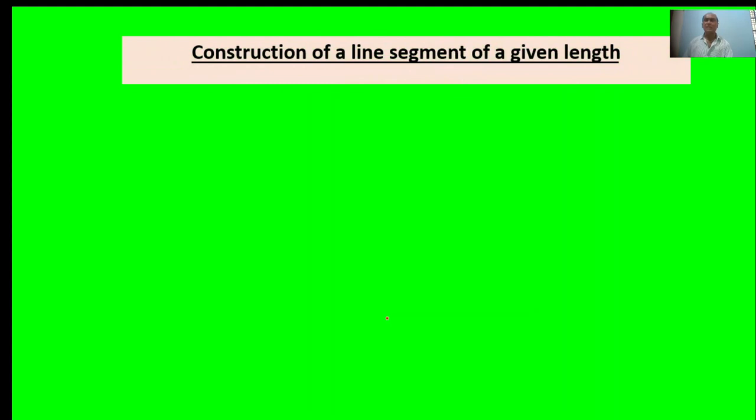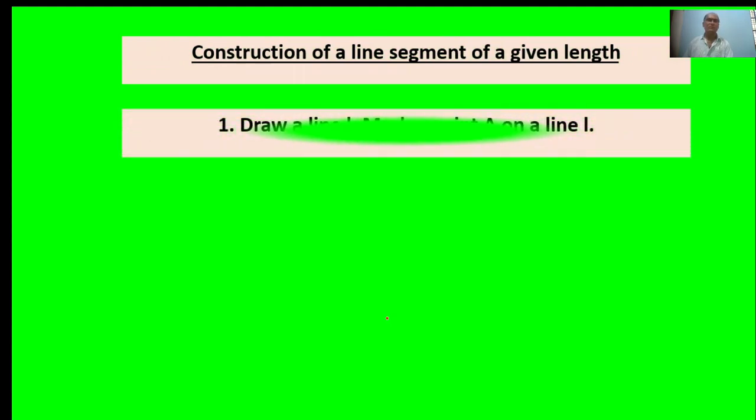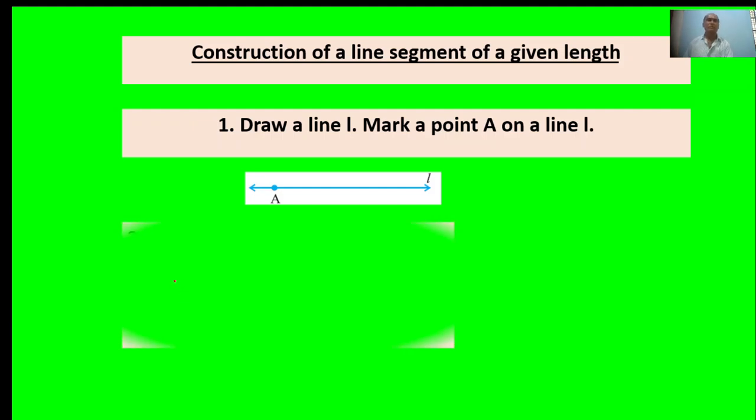Constructing a line segment of a given length. First point: Draw a line L. Mark a point A on the line. Point A is marked.